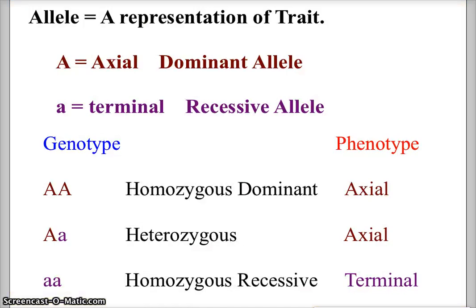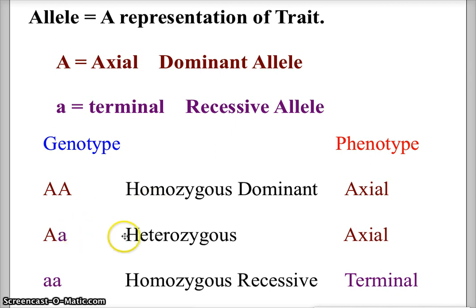To review vocabulary: alleles are letters that represent the trait. The capital A allele for axial is dominant; lowercase a for terminal is recessive. The combination of alleles is called the genotype. Homozygous dominant is capital A capital A — homo meaning same — and the phenotype is axial because the dominant trait is present. Heterozygous capital A lowercase a also shows the axial phenotype. Homozygous recessive lowercase a lowercase a is when we see the recessive outcome: terminal.